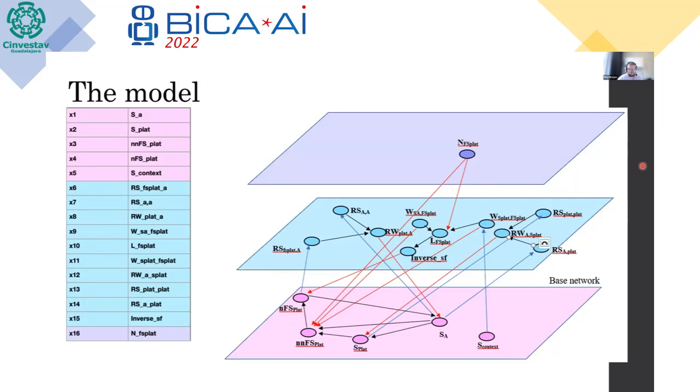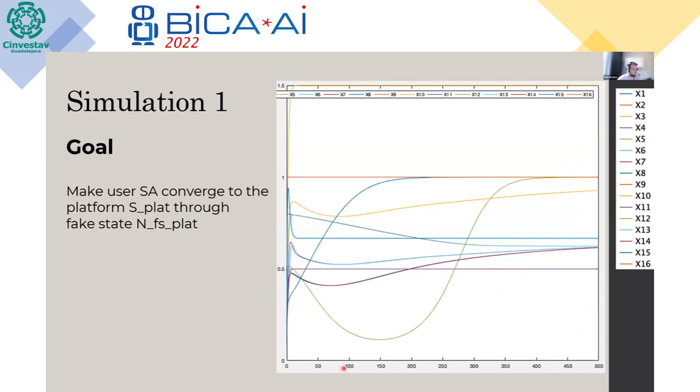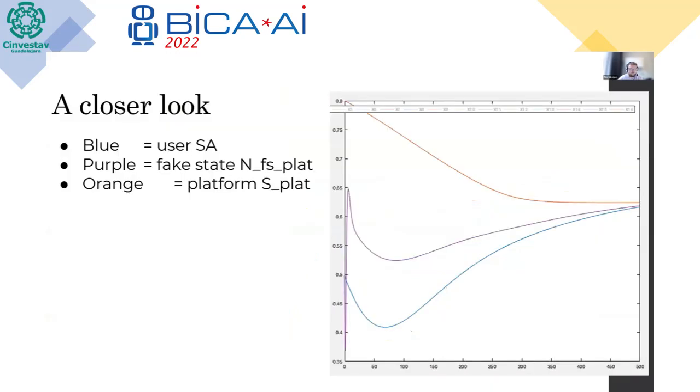Then we ran some simulations. So the goal was to make users converge to the platform through the fake state. So if we zoom in on this, the blue one is the user. So the user has a specific interest, and we see that the purple line is the fake state. So the algorithm needs some time to adjust, and then it catches the user and brings it towards the intention of the platform.